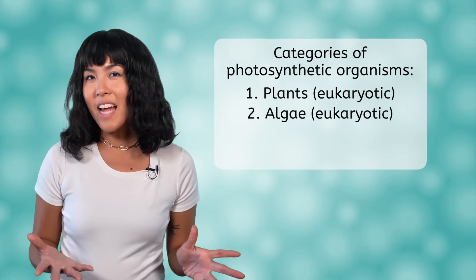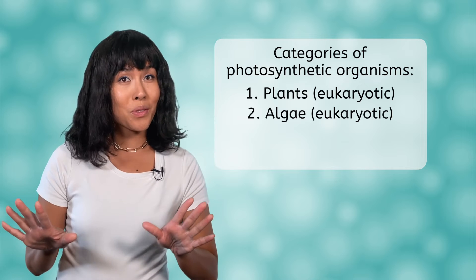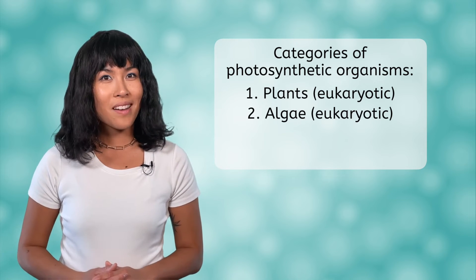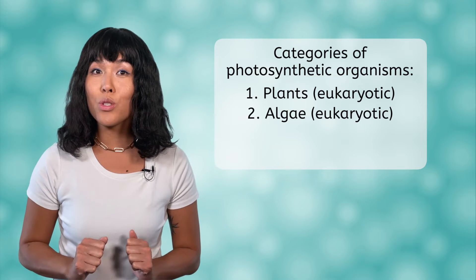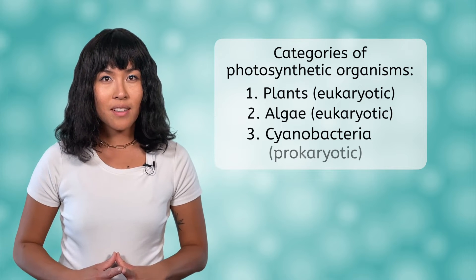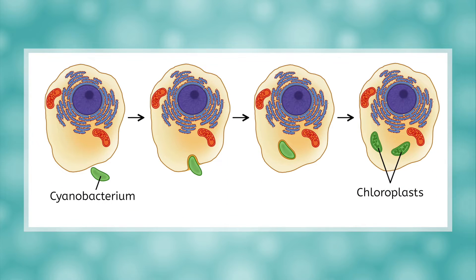Okay, so plants and algae contain chloroplasts and perform photosynthesis. But what about that third category of photosynthetic organisms? It is a special group of bacteria called cyanobacteria. Do you remember what type of cells bacteria are? They're prokaryotic. In fact, evidence suggests that today's chloroplasts originated from cyanobacteria, which entered eukaryotic cells more than a billion years ago, giving eukaryotic cells the power to photosynthesize. These lucky eukaryotic cells were the early ancestors of today's plants and algae.